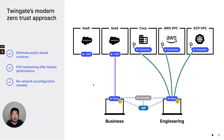At TwinGate, we're all about replacing VPNs with the least amount of friction possible without you having to recut your network. Today, we're going to talk about the connector, which is one of the unique components of TwinGate that helps you get rid of your VPN.